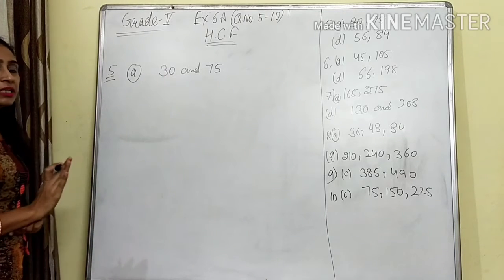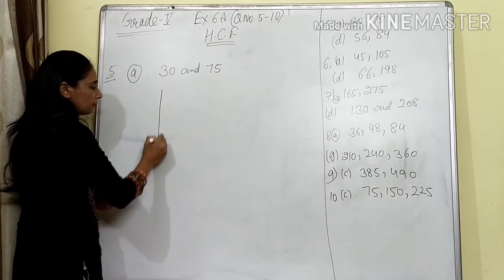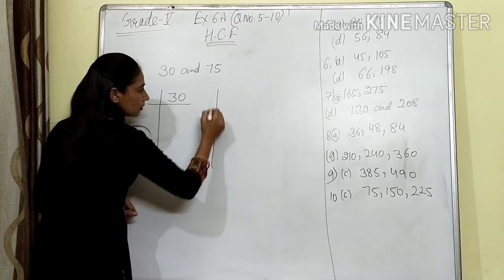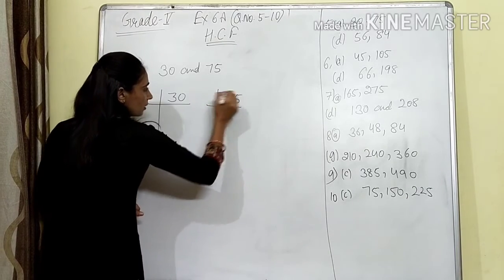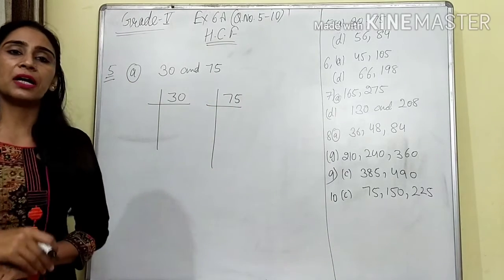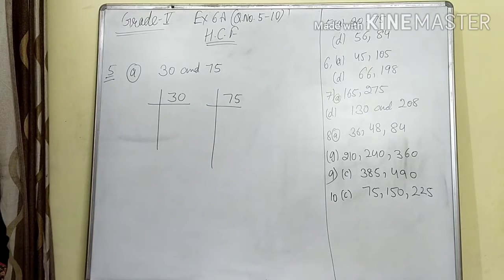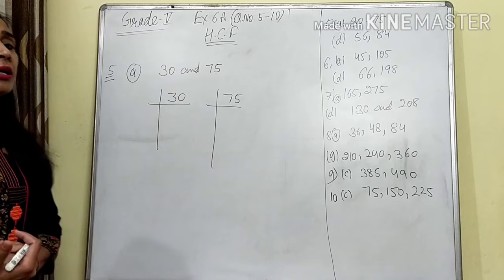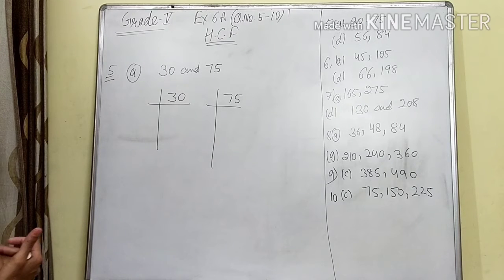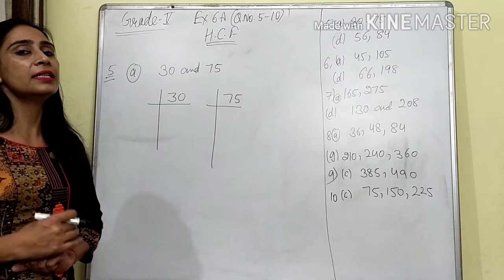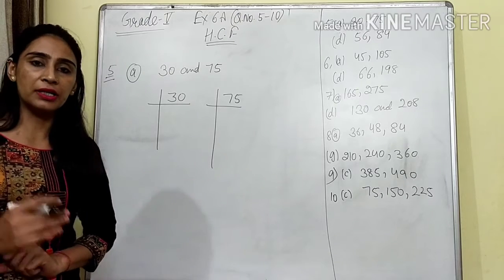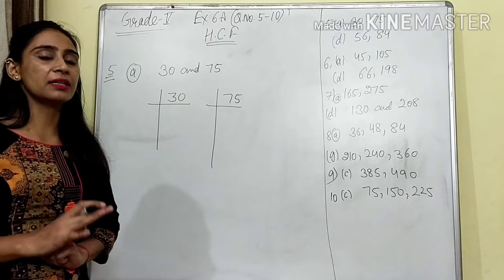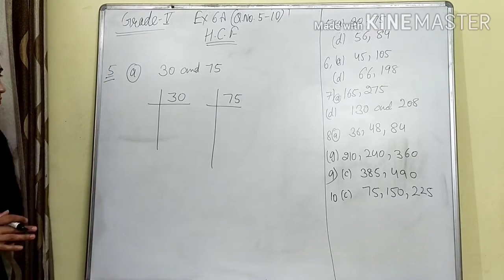Here, 30 is given. We will write 30 and 75 separately like this. Now we have to find out the prime factors. Prime factor means prime numbers. Prime numbers are those that come in the table of 1 and itself only, and do not come in any other table. Those are our prime numbers.